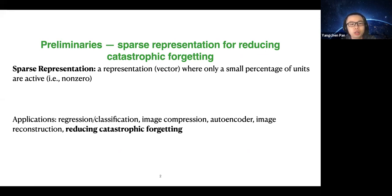Sparse representation has been applied in standard regression and classification tasks, also in image compression, autoencoders, and image reconstruction. But here, our main motivating application is using it for reducing catastrophic forgetting.